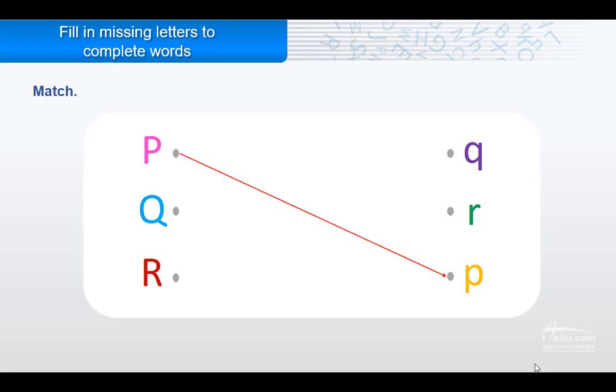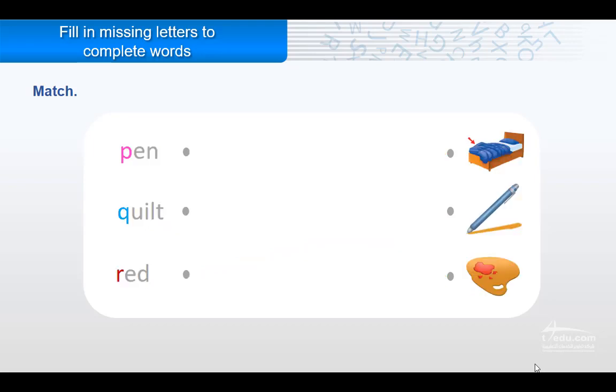P, very good. Q, where is the small letter of the letter Q? Nice. And the last one, R, very good, wonderful. Now match, match.